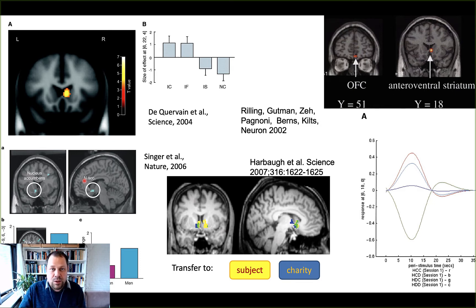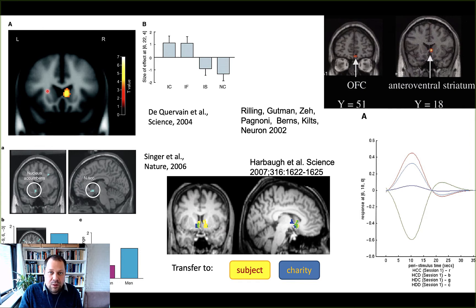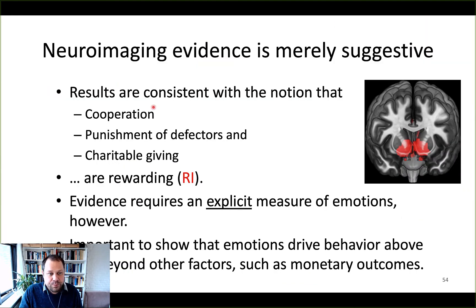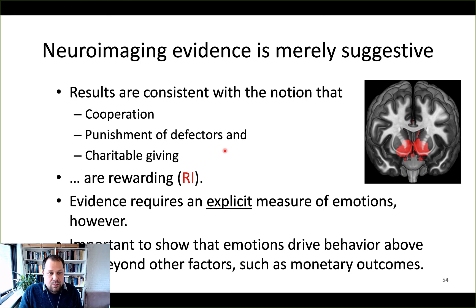The inference here could be that there seem to be aspects about social interactions that are rewarding — for instance, when mutual cooperation takes place, or when we get to punish people that have mistreated us. The results are basically consistent with this notion that activations in the reward center, or in the valuation network, are indicative of the rewarding nature of cooperation, punishment of defectors, charitable giving, and many other examples that exist now in the literature.